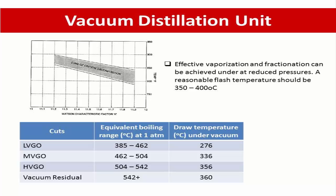Typical draw temperature of distillation from the Vacuum distillation column. For LVGO equivalent boiling range around 385 to 462, the draw temperature under Vacuum is only 276, MVGO draw temperature is 336, HVGO draw temperature is 356, and Vacuum residual is 360 above.